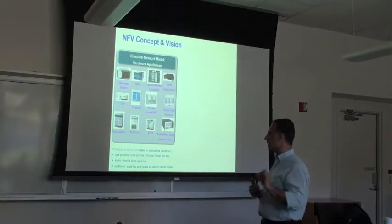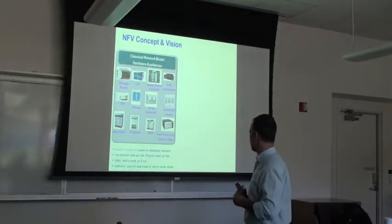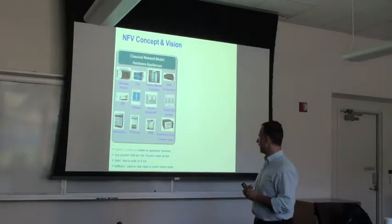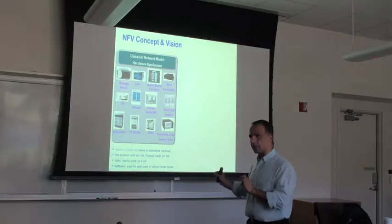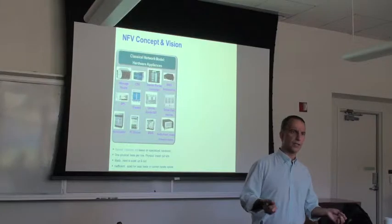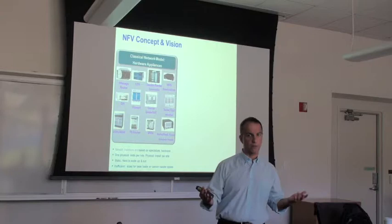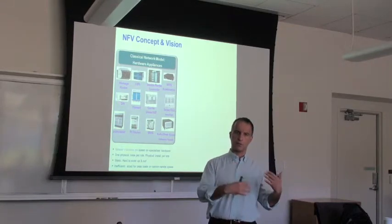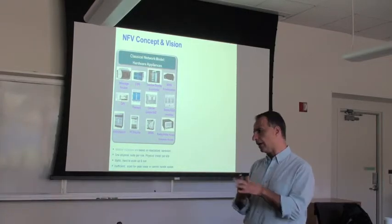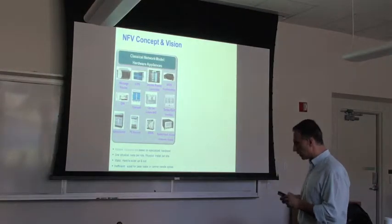You have one physical node per role — one particular box that does one thing. It also requires physical installation, so you have to send someone out in the field to install it. It's very static, which means it's very hard to move. It makes it very inefficient in terms of handling spikes in traffic, and most devices are sized for peaks, so they're underutilized most of the time.